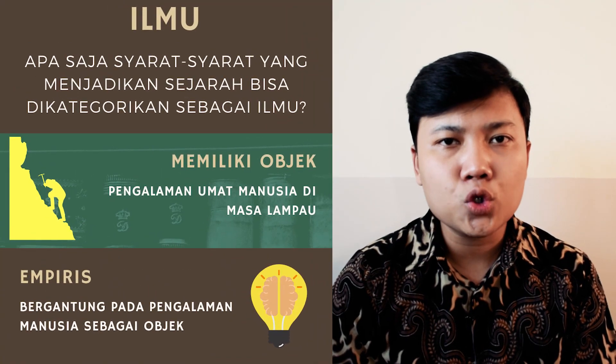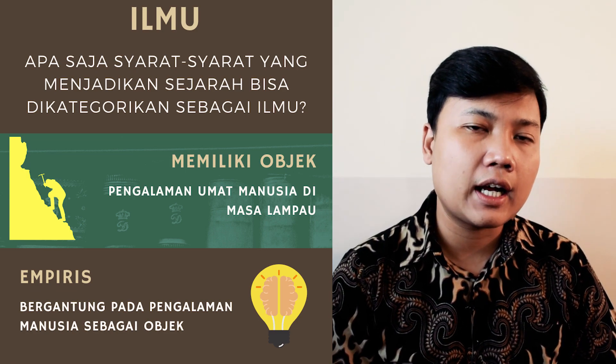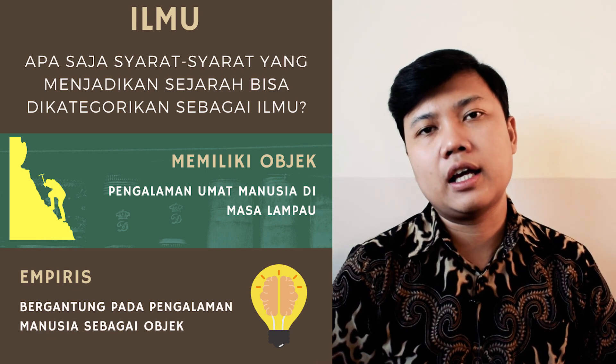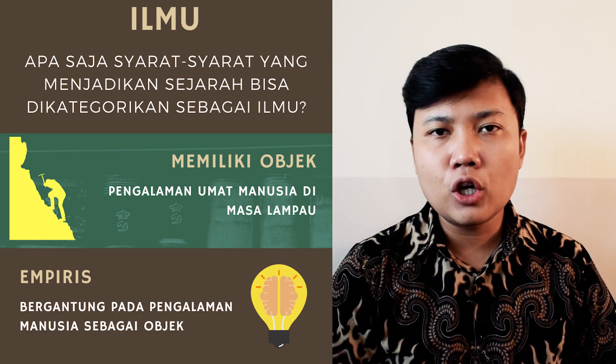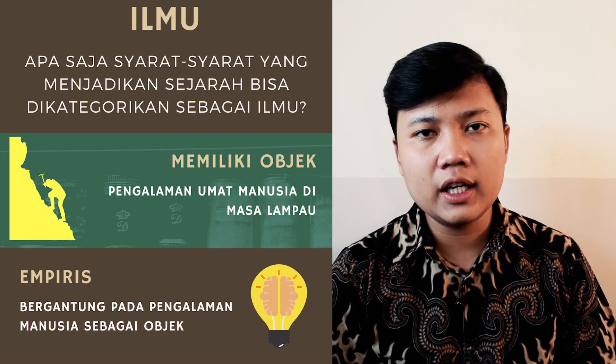Sekarang saya akan membahas pendalaman dibandingkan video sebelumnya. Saya sempat menyebut sejarah sebagai ilmu, maka sekarang kita telisik lebih jauh apa yang dimaksud dengan sejarah sebagai ilmu. Yang menjadi pertanyaan adalah apa saja syarat-syarat yang harus ada agar sejarah bisa dikategorikan sebagai ilmu pengetahuan. Yang pertama, ilmu itu harus memiliki objek studinya masing-masing. Misalkan sosiologi objek studinya tentang masyarakat, antropologi objek studinya adalah budaya, biologi objek studinya makhluk hidup. Lantas objek studi dari ilmu sejarah apa?